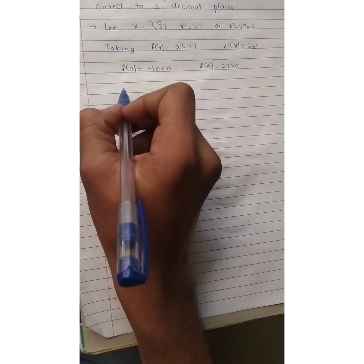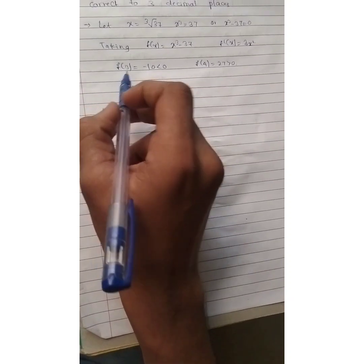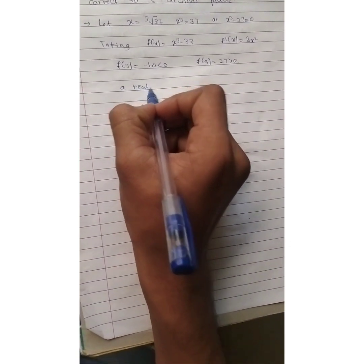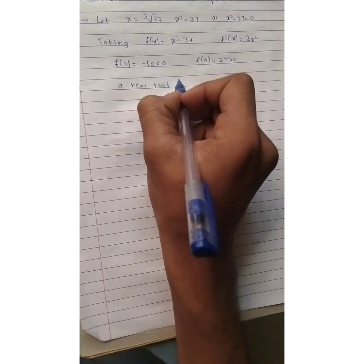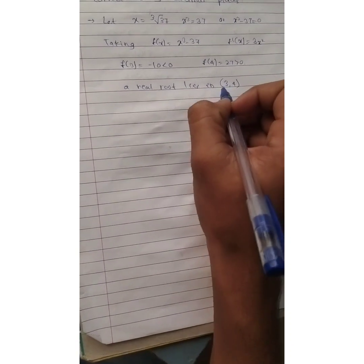Now, we shall find where the root lies in. That is, real root lies in between 3 and 4. Real root lies in 3 and 4, 3 comma 4.